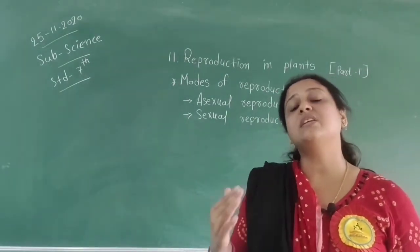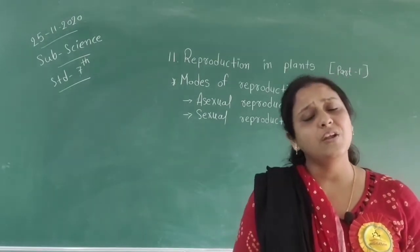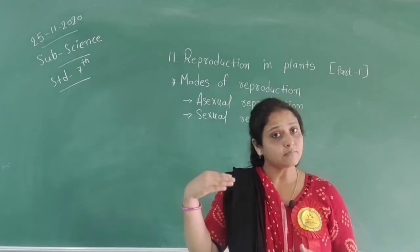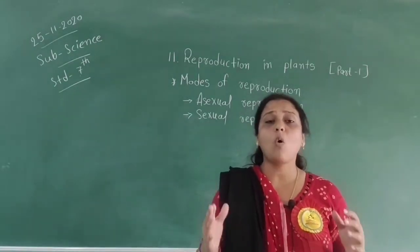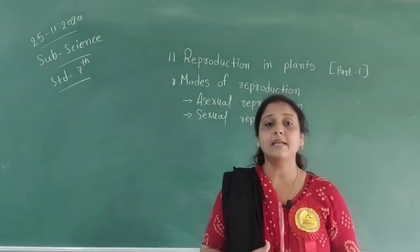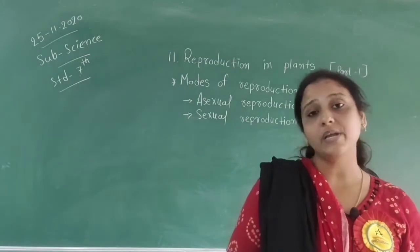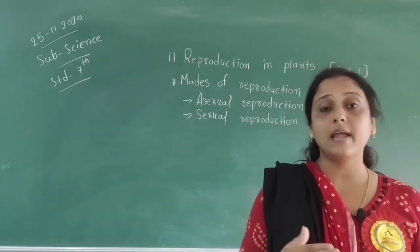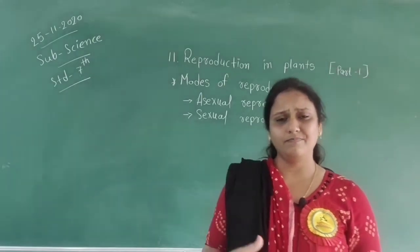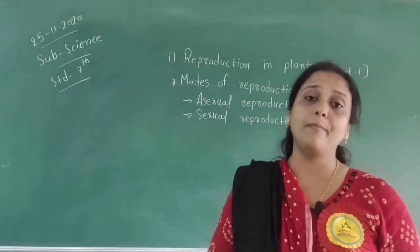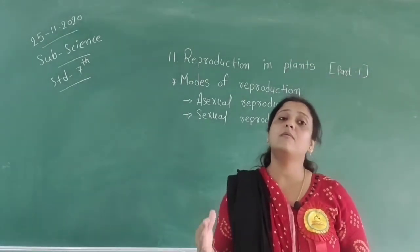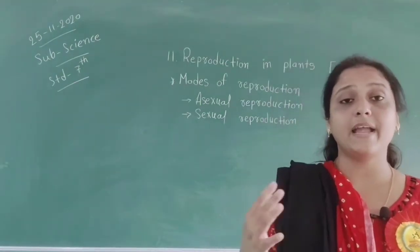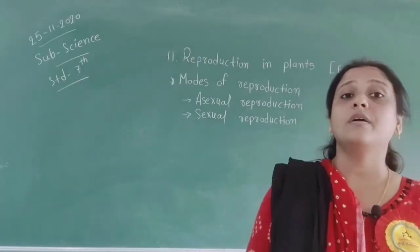All organisms which live on earth do reproduction. If they do not reproduce, how will we get other living organisms? Because of this reason, they all do reproduction. We can also see this in plants — plants also do reproduction. The production of new individuals from the parent is known as reproduction.